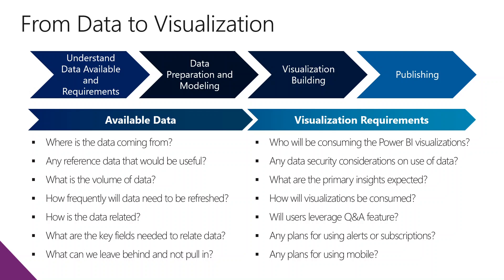Is there any reference data that would be useful? In our example in the labs, we've got a reference table for manufacturers of equipment. How frequently does the data need to be refreshed — does it need to be near real time, or can it be on a schedule? How is the data related — are there columns from one source you can link to another source? What things do you not need? What things can you leave behind? You've really got to look at your available data and understand what's available and what the requirements are for reporting.